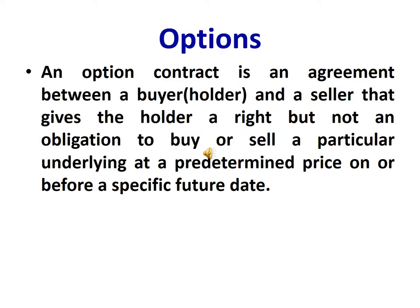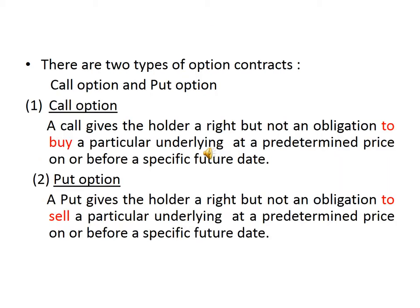Options. An option contract is an agreement between a buyer, holder, and a seller that gives the holder a right but not the obligation to buy or sell a particular underlying at a predetermined price on or before a specific future date. There are two types of option contracts: call option and put option.